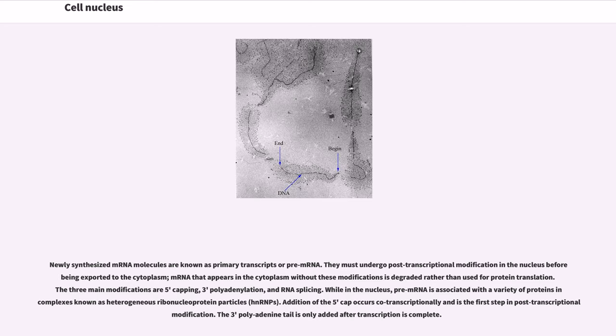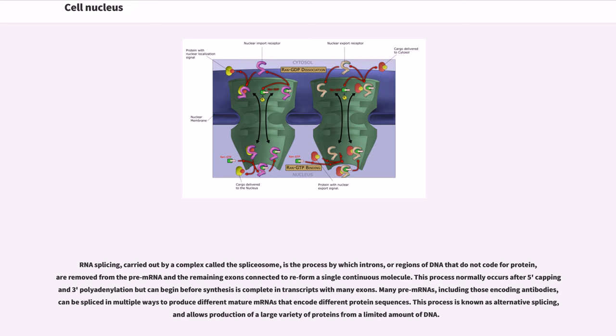The three main modifications are 5' capping, 3' polyadenylation, and RNA splicing. While in the nucleus, pre-mRNA is associated with a variety of proteins and complexes known as heterogeneous ribonucleoprotein particles, hnRNPs. Addition of the 5' cap occurs co-transcriptionally and is the first step in post-transcriptional modification. The 3' poly-A tail is only added after transcription is complete. RNA splicing, carried out by a complex called the spliceosome, is the process by which introns, or regions of DNA that do not code for protein, are removed from the pre-mRNA and the remaining exons connected to reform a single continuous molecule. This process normally occurs after 5' capping and 3' polyadenylation but can begin before synthesis is complete in transcripts with many exons. Many pre-mRNAs, including those encoding antibodies, can be spliced in multiple ways to produce different mature mRNAs that encode different protein sequences. This process is known as alternative splicing, and allows production of a large variety of proteins from a limited amount of DNA.